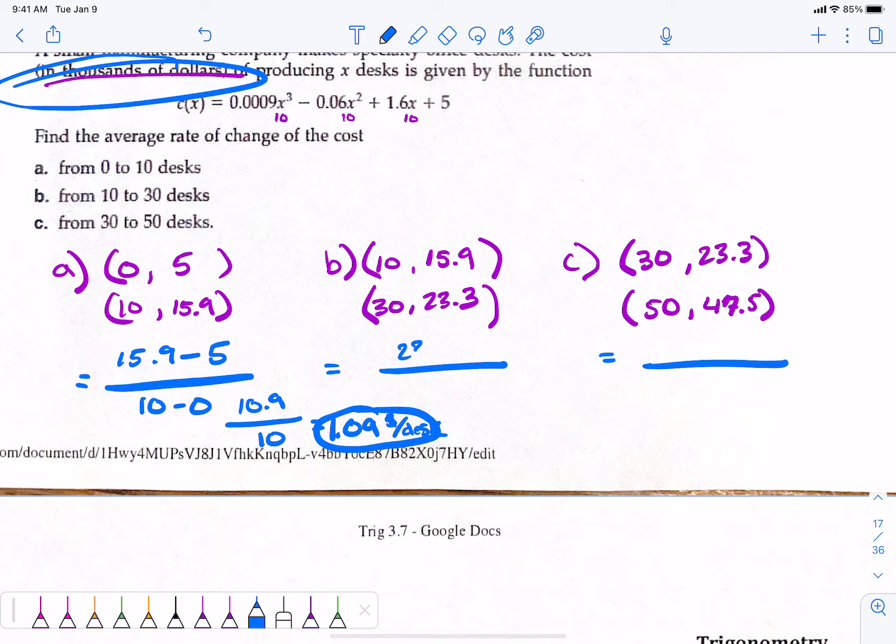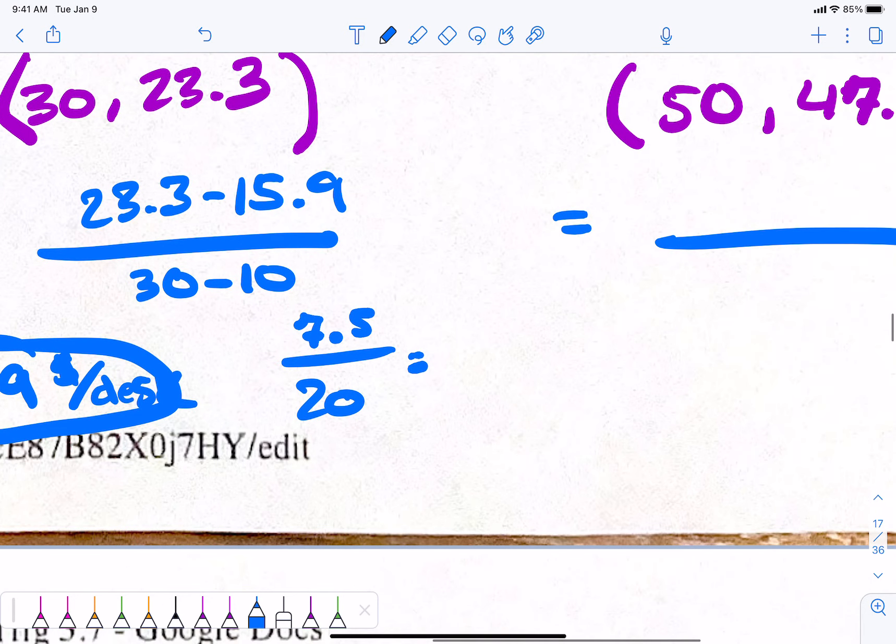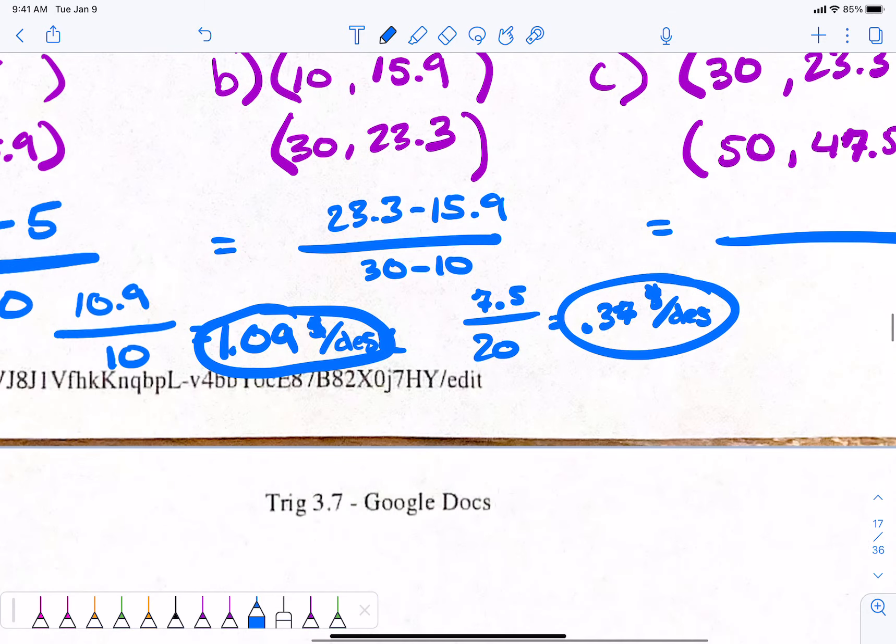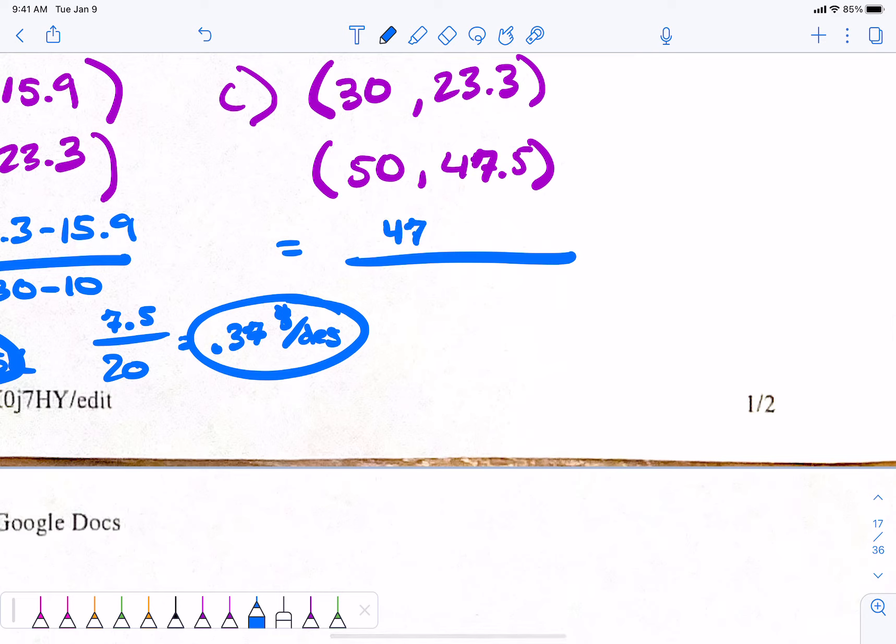Let's do this one. So 23.3 minus 15.9 over 30 minus 10, which is 20 on the bottom. 0.37. 7.4 divided by 20? 0.37. Dollars per desk. Which is really, actually, how much? 370. You're moving the decimal three decimal places. So $370 per desk. So we went down like we anticipated. You buy in bulk, it's cheaper per desk. But let's see if this one does.